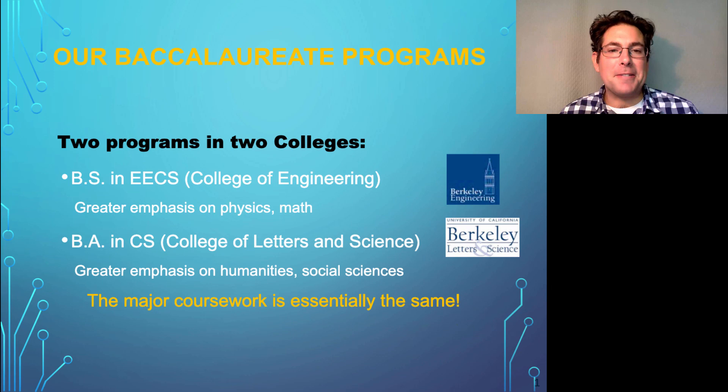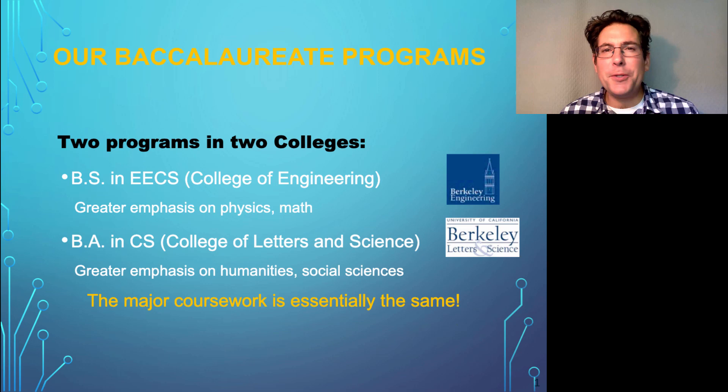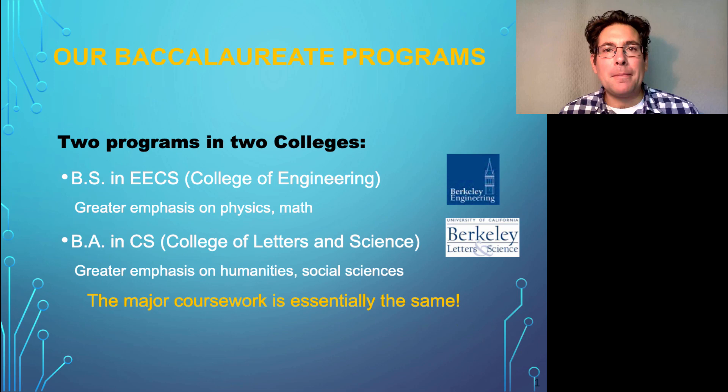Because they're in different colleges, they have different breadth requirements. EECS students have to take physics; CS students don't. But the courses you take with us are the same. Both programs offer a lot of flexibility—whether you major in EECS or CS, you can focus more in computer science, more in electrical engineering, or mix the two together, which is what most students do. So much of what's going on in the world today lies at the intersection of these two disciplines, which at Berkeley are housed in one department, making the lines between electrical engineering and computer science here very blurry—and that's a wonderful thing.